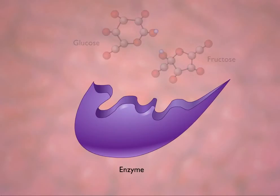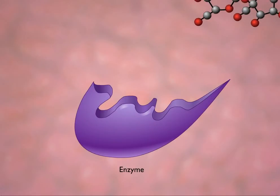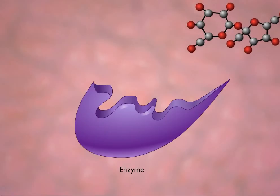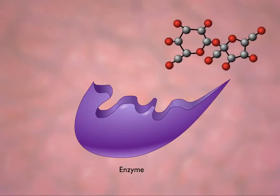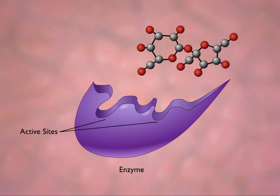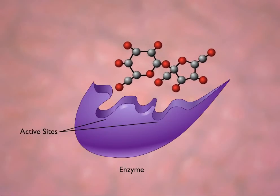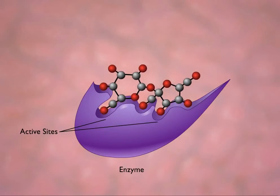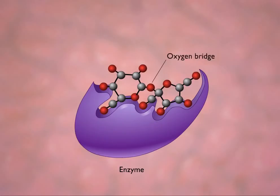Hydrolysis is accomplished because when the sucrose molecule binds to the active site of the enzyme, the enzyme's configuration is changed so that the oxygen bridge between the two monosaccharides is exposed to water molecules in the solvent.